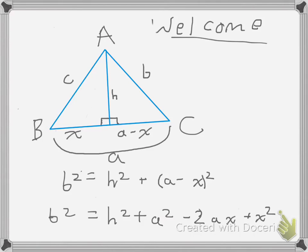Then, simplify to b squared equals h squared plus a squared minus 2ax plus x squared.